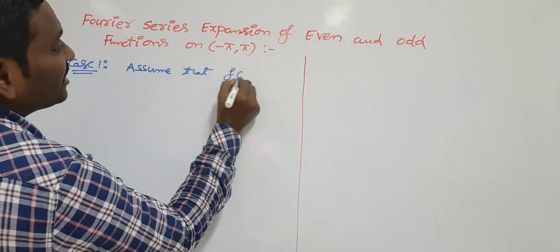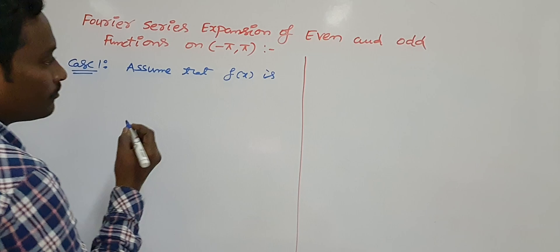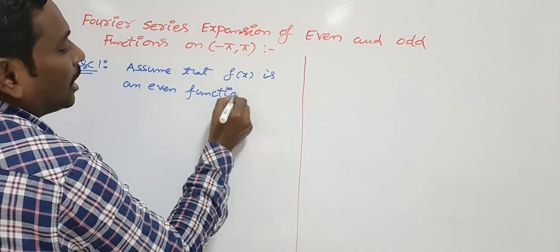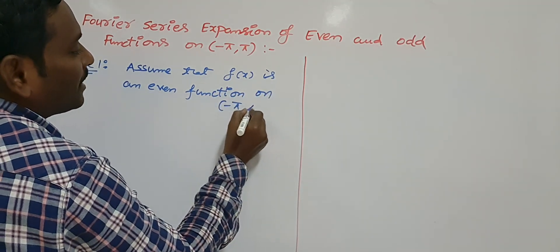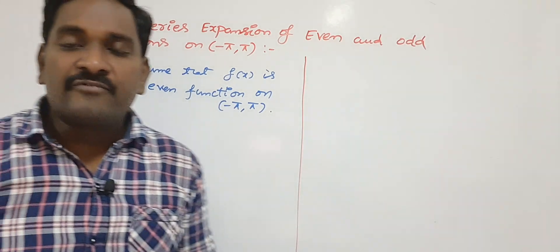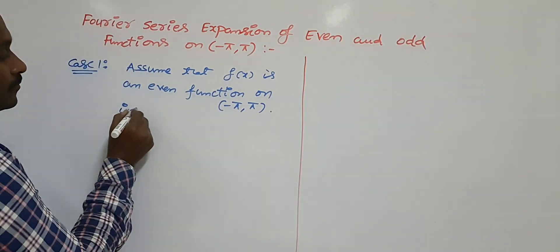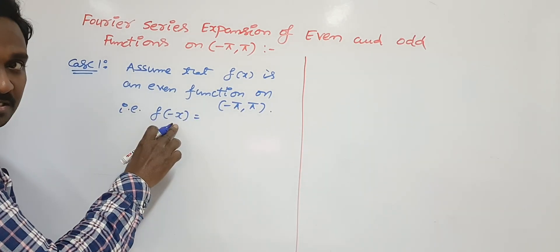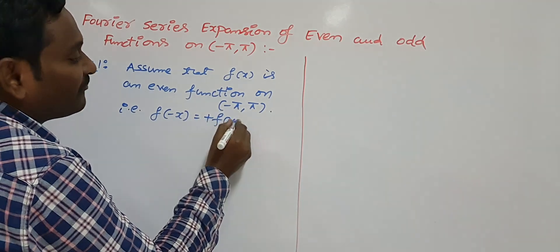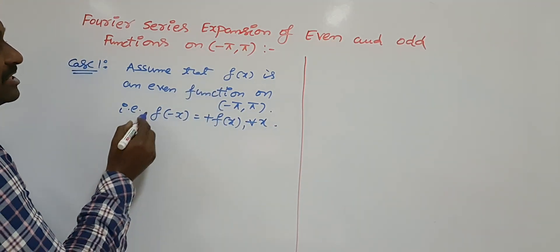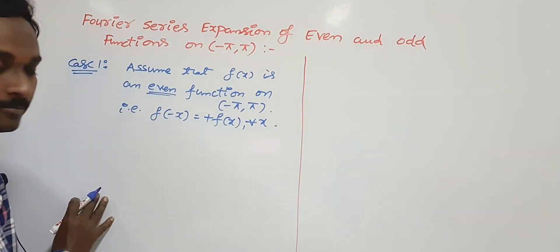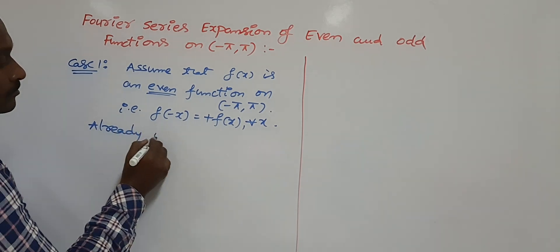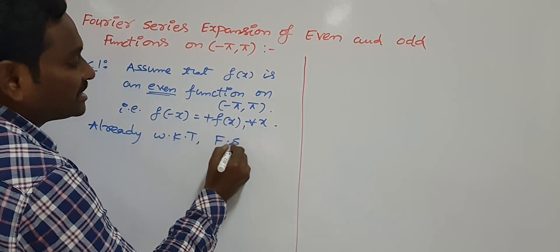First of all, I am assuming that the given function f(x) is an even function on the open interval (-π, +π). What is meant by even function? Suppose f(-x) equals +f(x) for all x, then the given function is an even function.